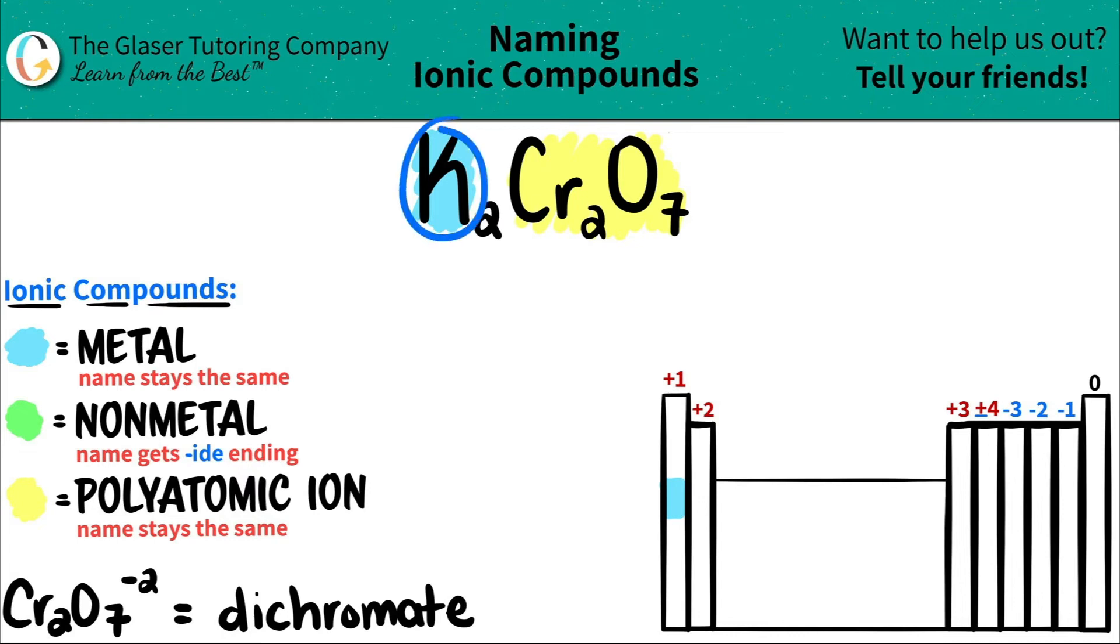Potassium comes first. So we got to name that first. But this is good because the metal name always stays exactly the same. So I'm just going to write potassium.